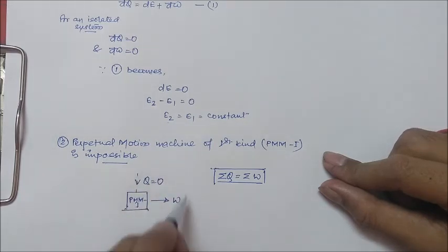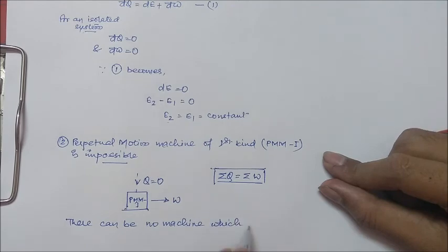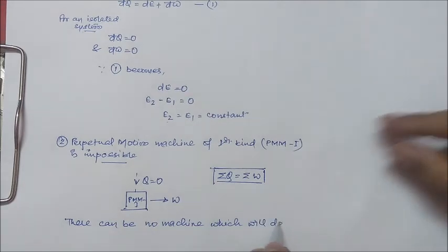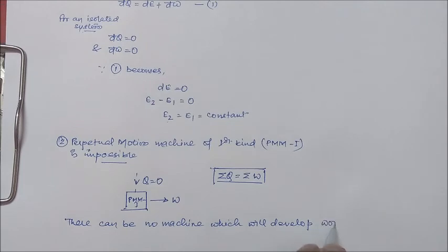This violates our first law of thermodynamics which says that there should be some energy to be taken by the machine to produce work. We can write it like this: There can be no machine which will develop work continuously without absorbing any form of energy.